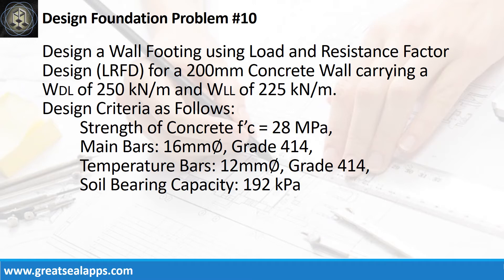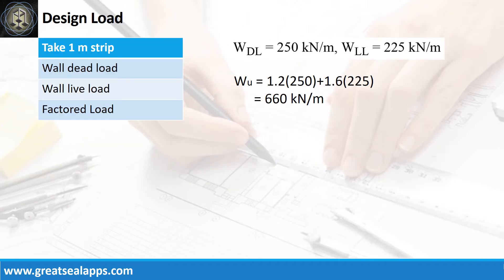Design criteria are as follows: strength of concrete 28 MPa; main bars 16 mm bar grade 414; temperature bars 12 mm bar grade 414; soil bearing capacity 192 kPa. The wall footing carries a uniform dead load of 250 kN per meter and uniform live load of 225 kN per meter, for a factored uniform load of 660 kN per meter.